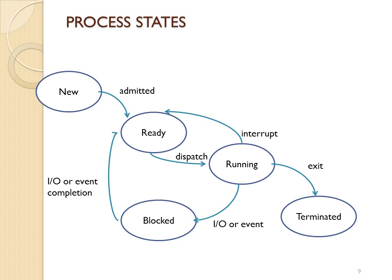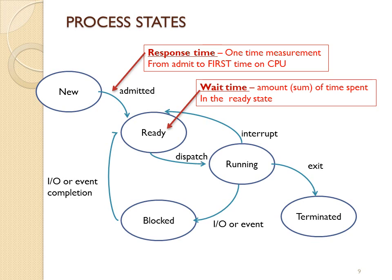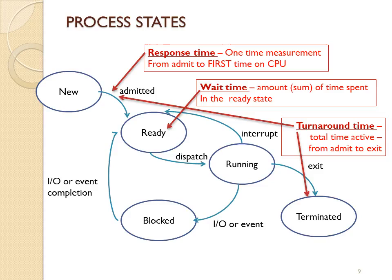On the state diagram: response time is a one-time measurement from when a process gets admitted and first enters the ready queue. Wait time is the sum of all time a process spends waiting in the ready state, and response time is the first measurement of that wait time. Turnaround time is the total time a process is active in the system — it's ready, then running, then interrupted, back to ready, running, out to IO, back waiting, executing, IO again, waiting again, then does the final CPU burst. All that total time is the turnaround time.